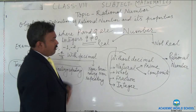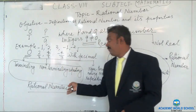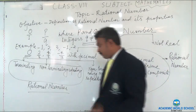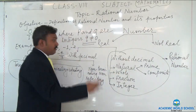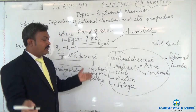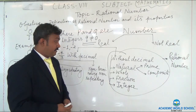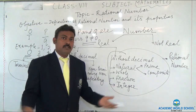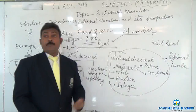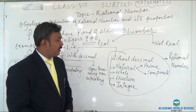All these groups are rational numbers — terminating decimals and non-terminating repeating decimals are also rational numbers. Natural numbers start from 1, so 1 to infinity are all rational numbers. Whole numbers start from 0, so 0 to infinity are all rational numbers. Integer is also obviously a rational number because every integer can be written in the form of P by Q. Whole numbers can also be written in the form of P by Q. Fraction is already in the form of P by Q.